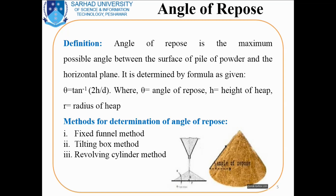It is determined using the formula: theta equals tangent inverse of 2h divided by d, where theta is the angle of repose, h is the height of the heap of sample, and r is the radius of the heap of sample. In the formula, theta equals tangent inverse 2h by d, and r is the radius — half of the diameter d divided by 2 gives us the radius of the heap.